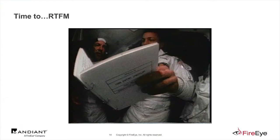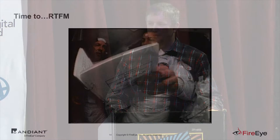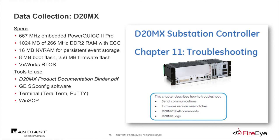Let's do some DFIR on two example substation RTUs. Your devices may be completely different, but this methodology is what we want to start sharing as people do more research. Read the manual — just like Apollo 11, they had manuals for everything. The first one is a GE D20MX. It's the newer version of the older D20, with a PowerPC processor, a gig of RAM, and VXWorks real-time operating system. Tools to use: the manual, SG Config software, terminal like Teraterm or PuTTY, and WinSCP. Chapter 11 covers troubleshooting — serial communications, firmware mismatches, shell commands, and logs.